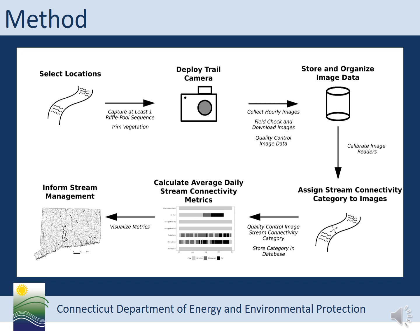This diagram shows our method for how we go from pictures to metrics to help inform decision makers. In general, we select a location on a stream that captures at least one riffle-pool sequence. When we deploy the trail camera, we set it to take one picture per hour. When we download the images back in the office, we assign a stream connectivity category to each image. Based on those categories, we calculate average daily stream connectivity metrics, which helps us to visualize the data and inform stream management.